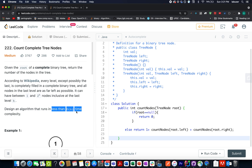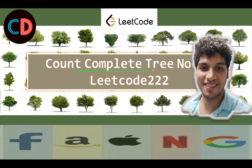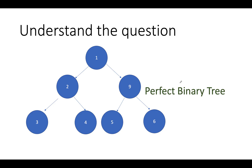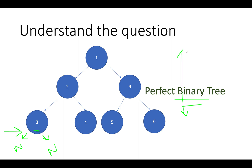Let's understand the definition of a perfect binary tree, since we'll use its properties to devise our algorithm. A perfect binary tree is a binary tree where each node has exactly two children — no node has a single child or no children except the last leaf nodes, where both children are null. If you know the depth of a perfect binary tree, can you count its number of nodes?